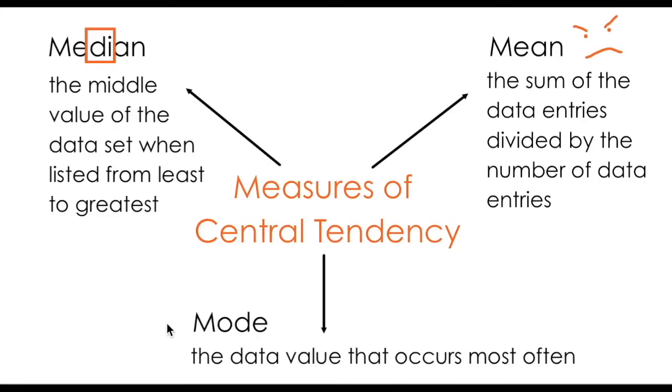Lastly, the mode of a set of data values refers to the data value that occurs the most often. You can have no mode, one mode, or more than one mode, depending on your set of data.